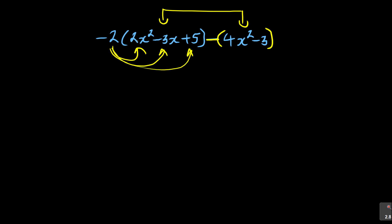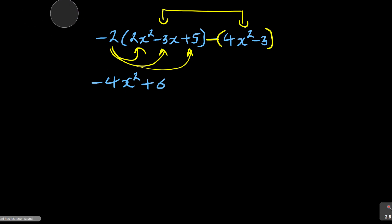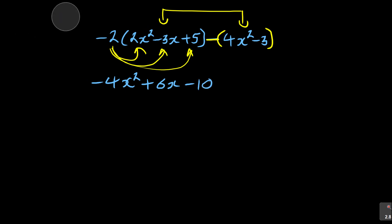Minus two times two is minus four x squared. Test with the calculator. Minus two times minus three - negative times negative is positive, so it's positive six, but check the calculator. Then minus two times five is ten, but negative ten. Check with the calculator. Then this minus sign - put it as minus one, so it's minus one times each term.